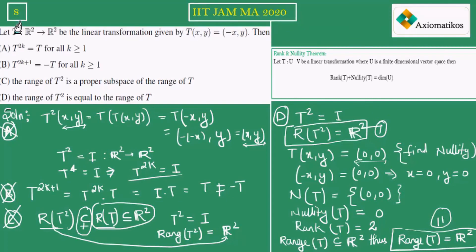So we have proved that A is incorrect, B is incorrect, C is incorrect, and D is correct. This rank-nullity theorem is a very important result in finite dimensional vector spaces for linear transformations. This is how we should proceed in the exam. Thank you.